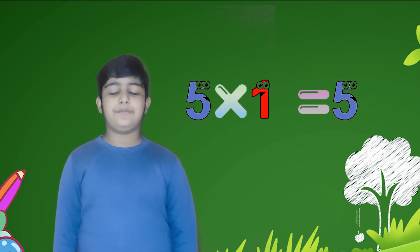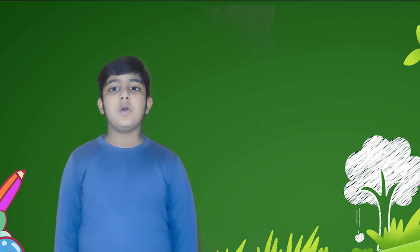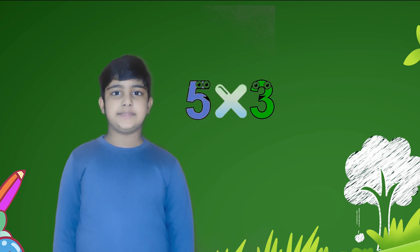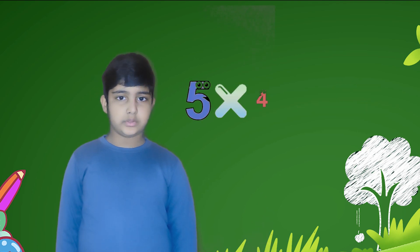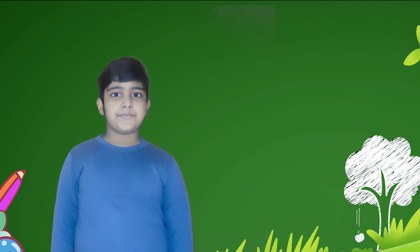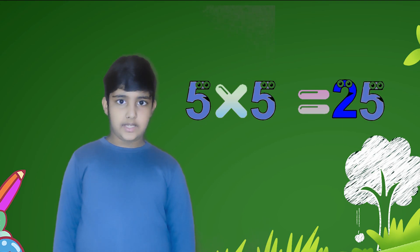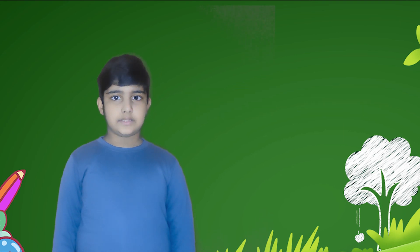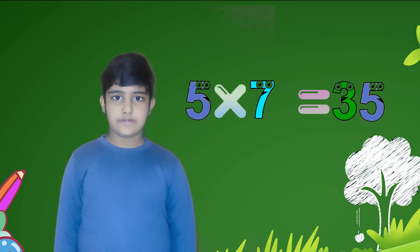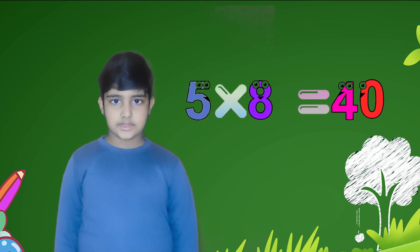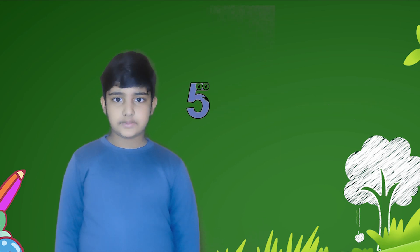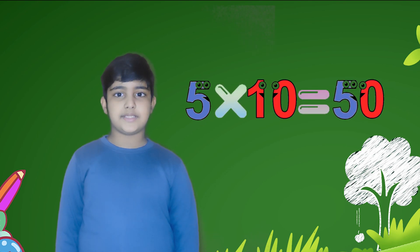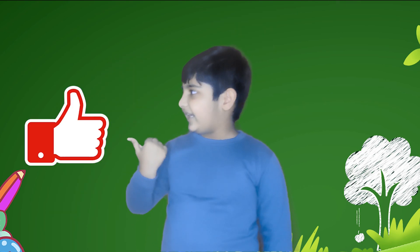Five ones are five, five twos are ten, five threes are fifteen, five fours are twenty, five fives are twenty-five, five sixes are thirty, five sevens are thirty-five, five eights are forty, five nines are forty-five, five tens are fifty.